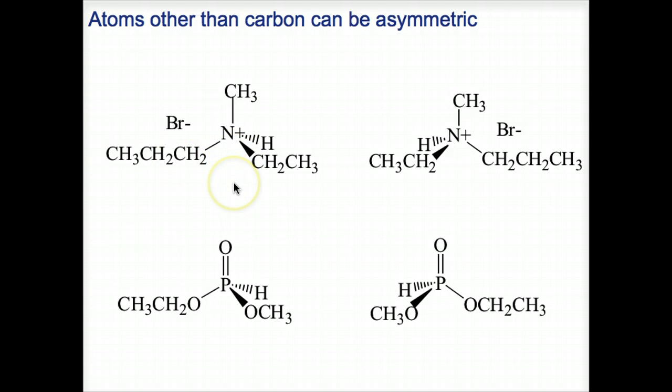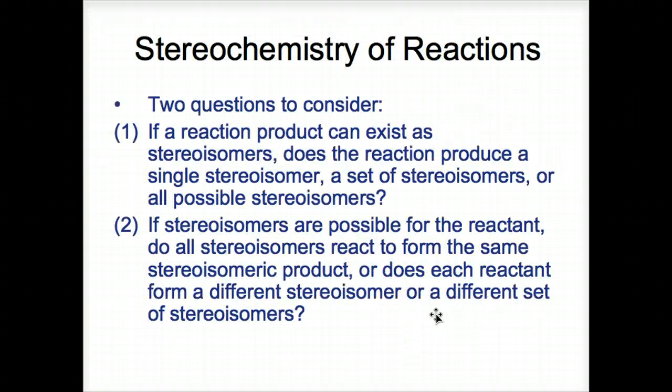This one is S. If we were to prioritize them, this would be one, this propyl group. Number two would be this ethyl group, and three would be the methyl group, and then four, the proton. Going from one to two, we go towards the left, we're turning to the left, so it's S. The other enantiomer right here, here's number one, here's number two. We go this way. We're actually going towards the right, so it is R. This one is S, this one is R.